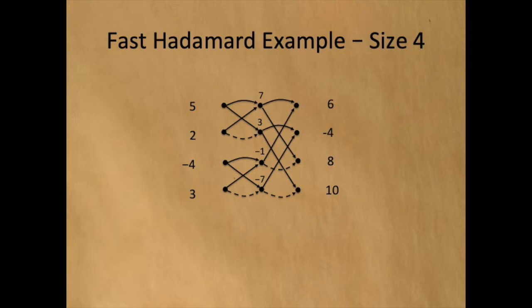To get the first dot in the second column, we add 5 and 2 to get 7. To get the third dot in the second column, we add minus 4 and 3 to get minus 1. The 6 equals the 7 plus the minus 1. And so on for all of the other output values.